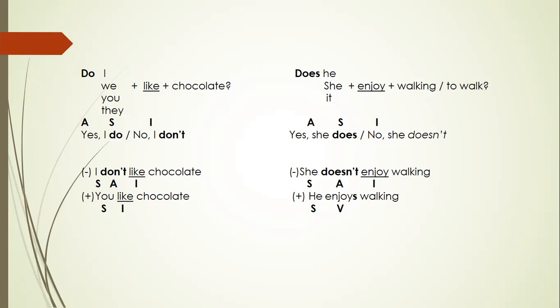Finally, to structure a question in English, following this formula: auxiliary, subject, and verb in infinitive. And for the negative: subject, auxiliary, and verb. For example: I don't like chocolate, or she doesn't enjoy walking.